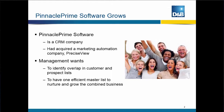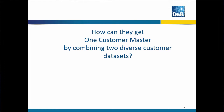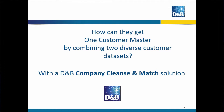To understand our scenario better, we're going to look at our fictitious company called Pinnacle Prime. Pinnacle Prime is a CRM company that has recently acquired a marketing automation company called PreciseView. So they have two separate lists of customers, and management wants to identify the overlap in these customer and prospect lists and have them combined into one efficient and complete master list so that they can grow their business. How can they get that one customer master by combining these two diverse, incomplete, and inconsistent customer data sets? This is a really common business problem. They can use a D&B company cleanse match solution.